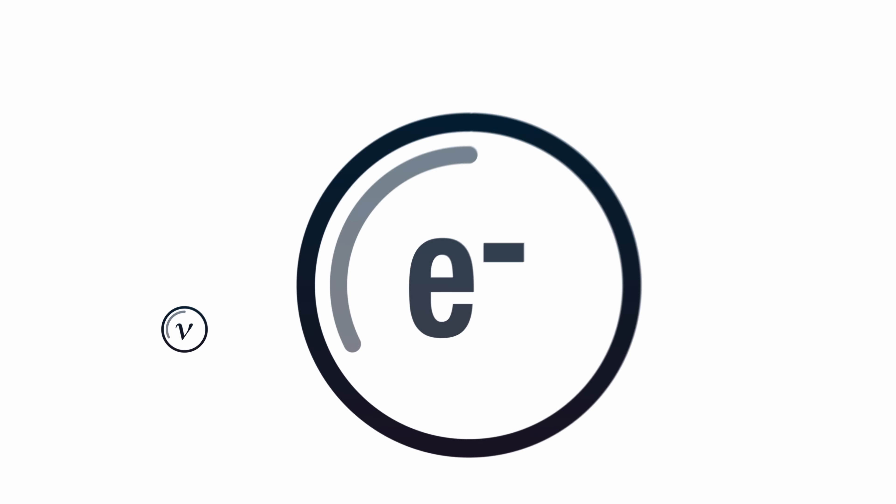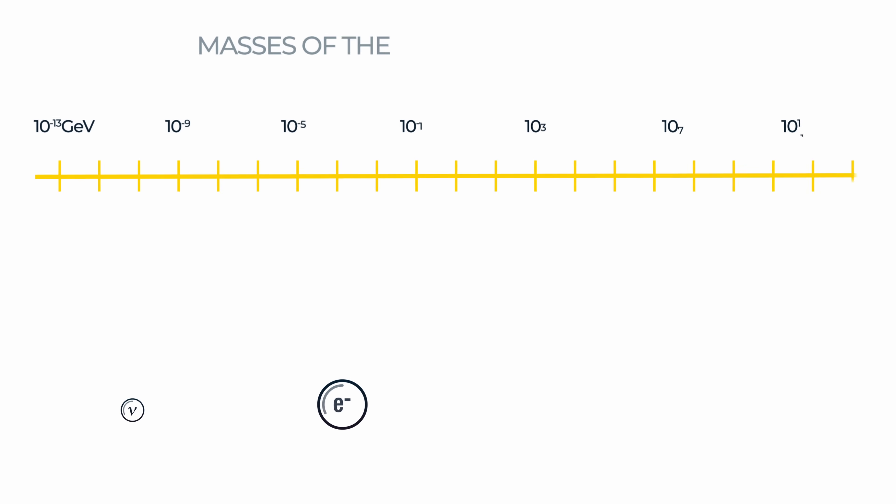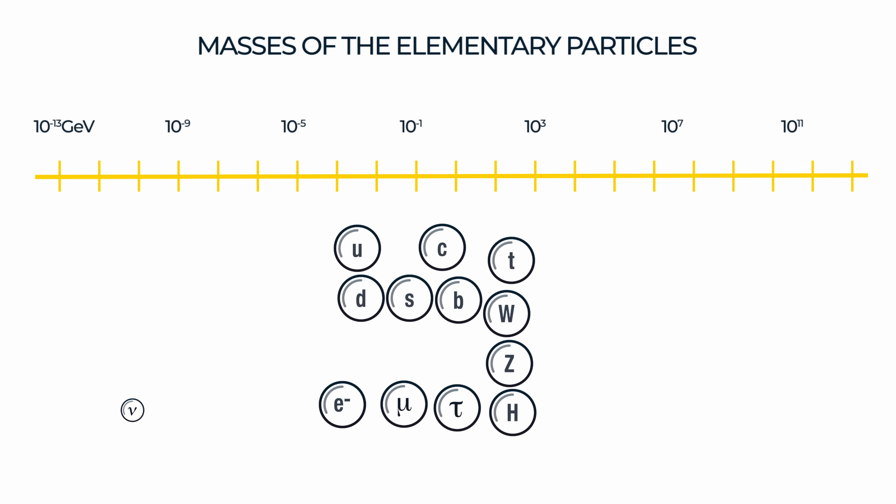Both of these measurements are pointing towards neutrino masses that are at least 625,000 times smaller than the next lightest particle, the electron. Any way you look at it, neutrinos don't fit the pattern. So why are neutrino masses so different from all the other particles? To answer this, we first have to understand how particles get mass. To help us, I've brought in my friend Pedro Machado, a theoretical physicist from Fermilab.